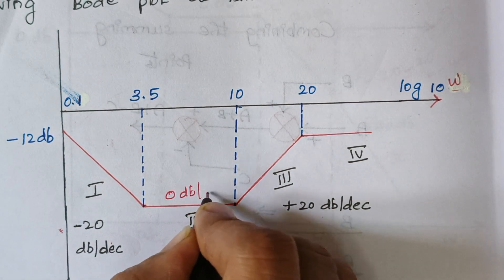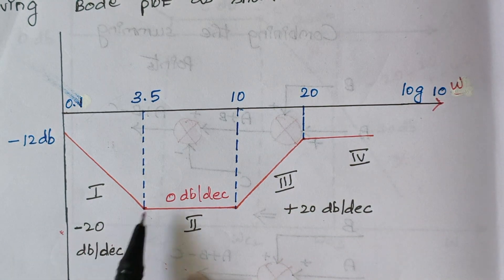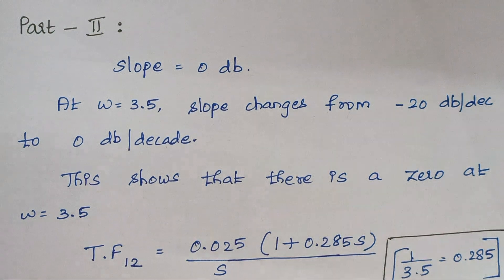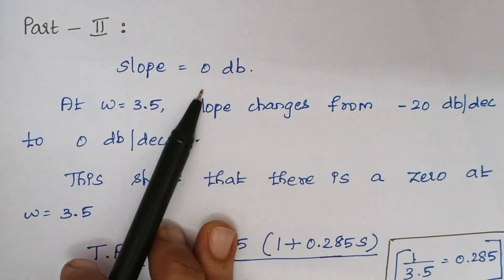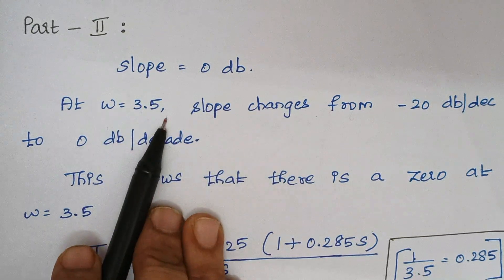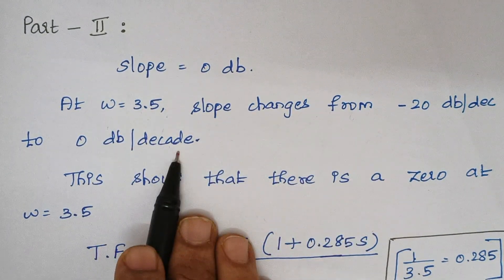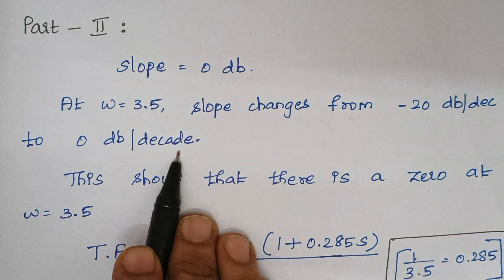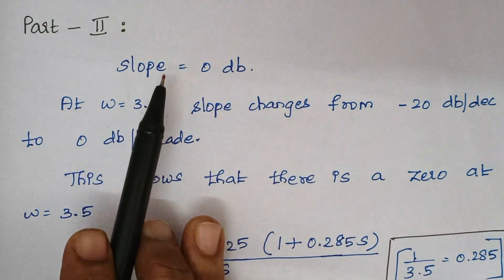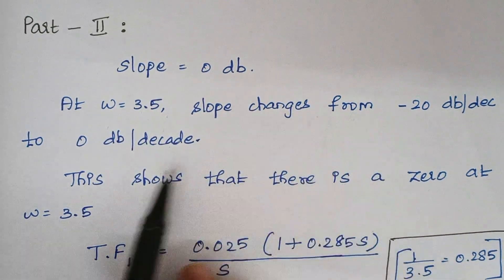At frequency 3.5, the slope changes from minus 20 to 0 dB per decade. These are the observations from the plot. The slope value is 0, and at frequency 3.5 the slope changes from minus 20 to 0 dB — this is clear from the diagram.